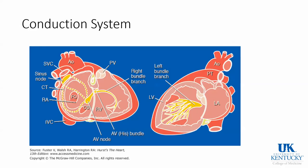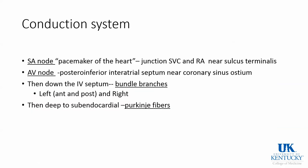Moving past the arterial supply, we talk about the conduction system. The SA node is the pacemaker of the heart and is located at the junction of the SVC and RA near the sulcus terminalis. The AV node comes next, in the posterior inferior interatrial septum near the coronary sinus ostium. Conduction then travels down the interventricular septum through the bundle branches — left with anterior and posterior fascicles, and the right — and finally deep into the subendocardial Purkinje fibers.